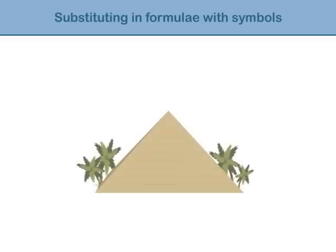Let's look at an example. The volume of a pyramid is given by the formula: Volume equals area of the base times the height divided by 3.